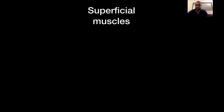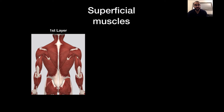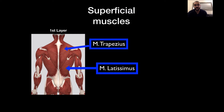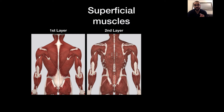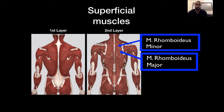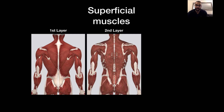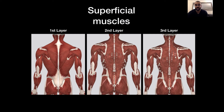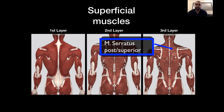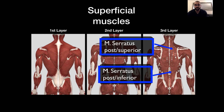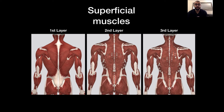The superficial muscles are divided into three layers. The first layer has the trapezius and the latissimus, and then if you remove them you will see the rhomboids major and minor and also the levator scapulae. And then if you remove them again you will see the musculus serratus posterior superior and posterior inferior. Removing those will reveal the deep muscles of the back.